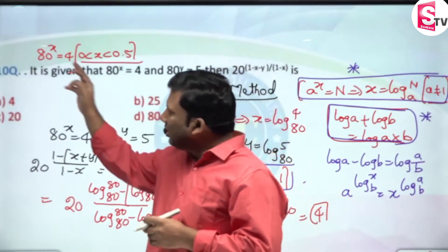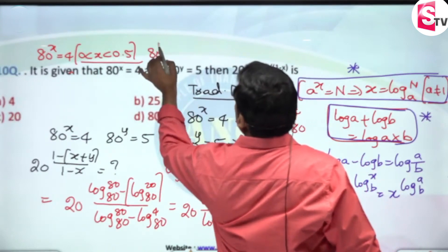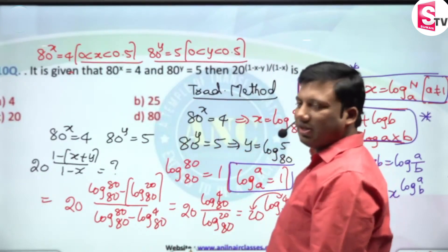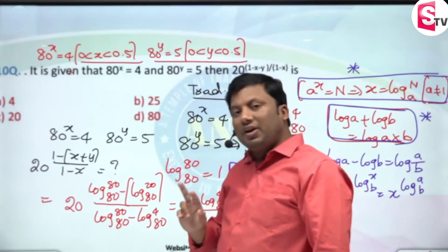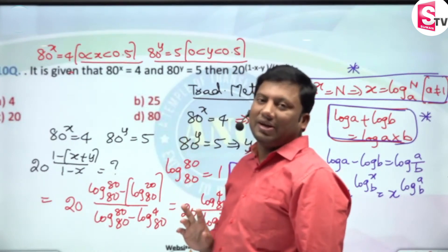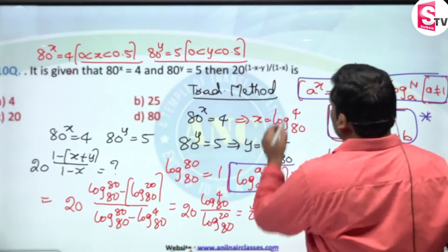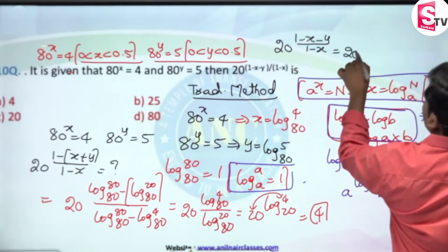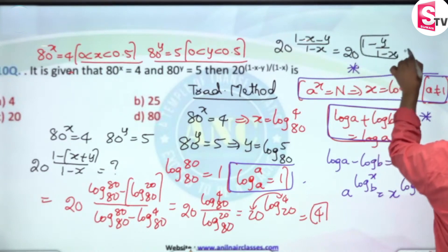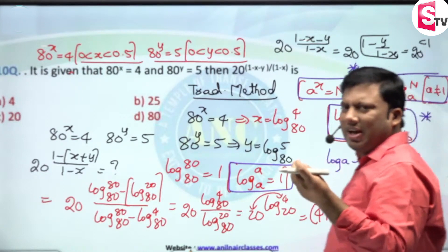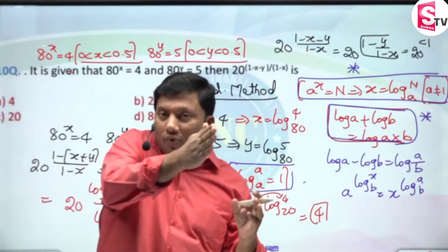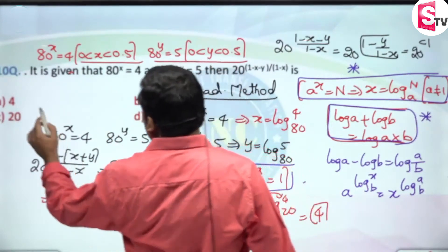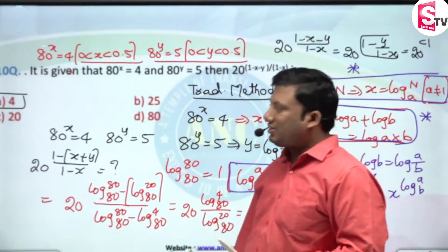So x is greater than 0, because 80^0 = 1. Similarly, 80^y = 5 means y is also greater than 0. Now in the expression 20^((1 - (x+y))/(1-x)), the power is '1 minus something', so the power is less than 1. Since x and y are both positive fractions, 1 minus a positive value is less than 1. Since 20^1 = 20, 20 raised to a power less than 1 must be less than 20. The answer is 4.